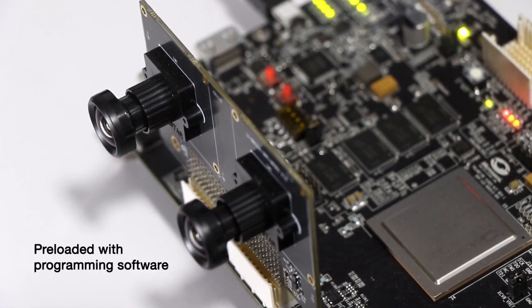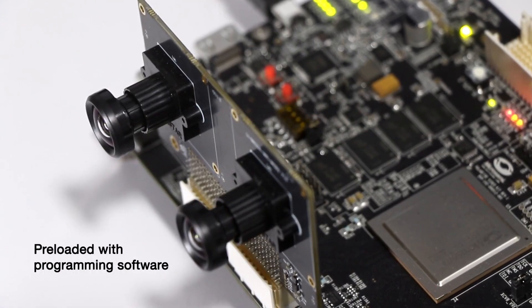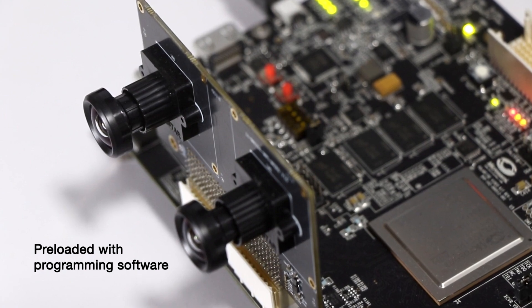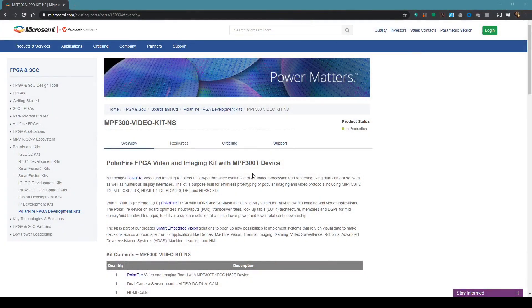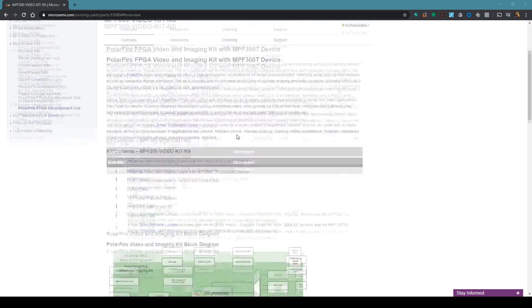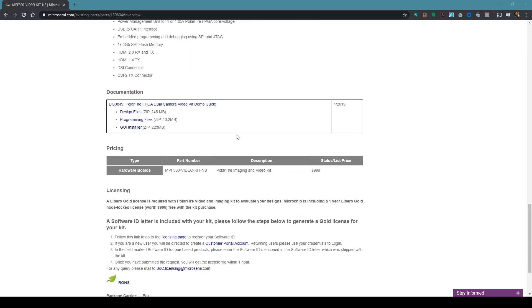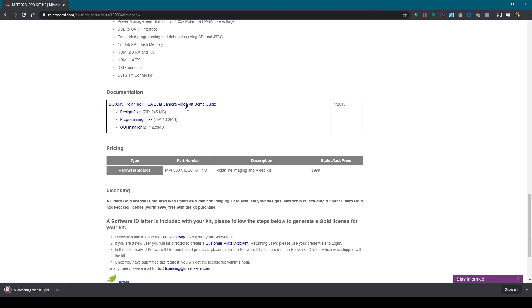This system comes preloaded with programming software, allowing you to output a video. Let's look at how to download and install the software. Navigate to the link shown. Scroll down the page until you locate the documentation section. Click the link for the PolarFire FPGA Dual Camera Video Kit Demo Guide.